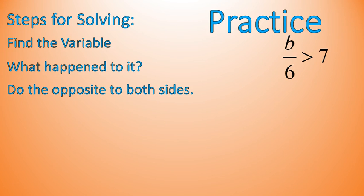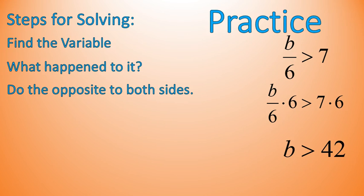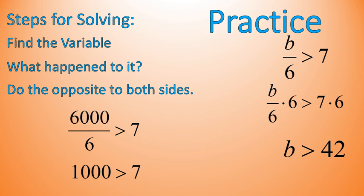Here's another practice question for you. Pause the video, do the question, and then come back and see what we get. Hopefully you've solved that. Your first step should have been to multiply both sides of this inequality times 6. 7 times 6 is 42, so B is greater than 42. I can check my work using any number that's greater than 42, and I like to make my numbers easily divisible by 6. So I'm going to use the number 6,000 — it is easily divisible by 6. 6,000 divided by 6 is 1,000, and it gives me a true statement: 1,000 is greater than 7. So I've checked my work to make sure that it is correct.